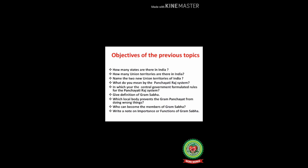Before proceeding further I would like to ask some questions. Number one: how many states are there in India? Number two: how many union territories are there in India? Number three: name the two new union territories of India. Number four: what do you mean by the Panchayati Raj system? Number five: in which year did the central government formulate rules for the Panchayati Raj system?